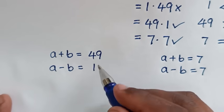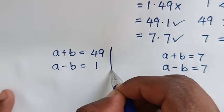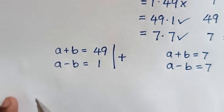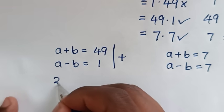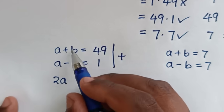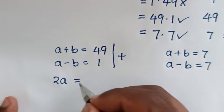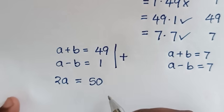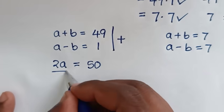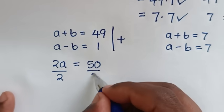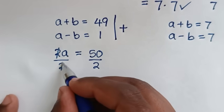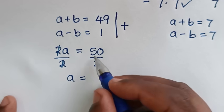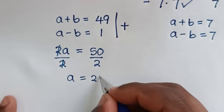We have a simultaneous equation. We will solve this by elimination method, so we add the two equations. Then a plus a is 2a, and b plus negative b is 0, which equals 49 plus 1 equals 50. Dividing both sides by 2, a is equal to 50 divided by 2, which is 25.